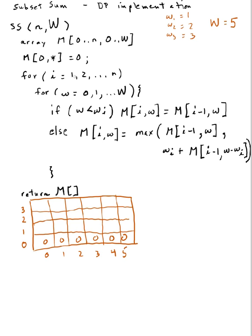Next we are going to go from i equals 1 to n, modifying the i-th row. We are calculating our m[i][w] element, going through the i rows. So we start with i equals 1, and w starts at 0, so I'm going to the 1,0 position. We'll be filling them in row-major order. So w equals 0: is 0 less than w sub 1? Yes it is, so I compute m[1][0] assigned the value m[0][0].